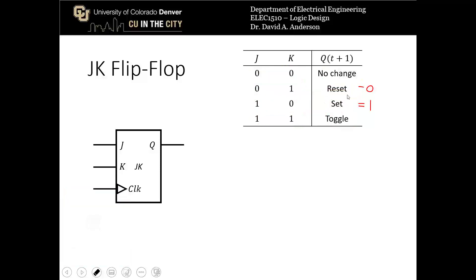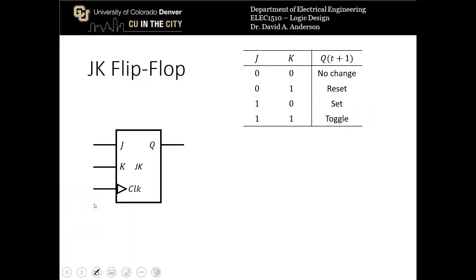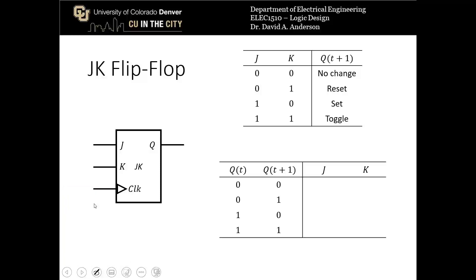Formulating the behavior of a JK flip-flop that way is not actually very helpful in state machine design, so we need to reformulate it. We're going to write the behavior using the old value Q(T), which we call the current state, and the next state Q(T+1).